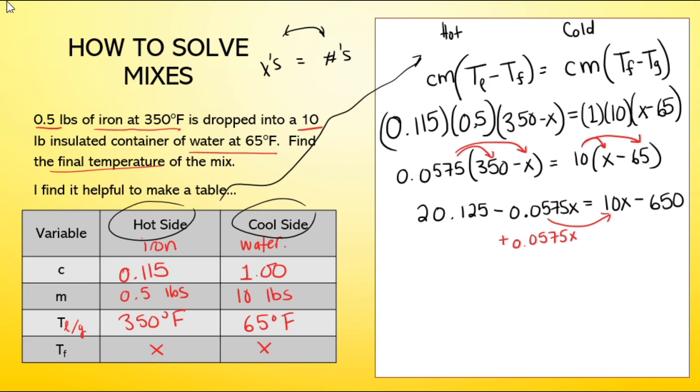If you do it on the left side, the rule in algebra is you must do the same action on the right side. So when I do that, my equation becomes 20.125 equals, and now I have to add 10 to 0.0575. The X doesn't change, it doesn't become X squared. You're just gathering like terms. Minus 650.